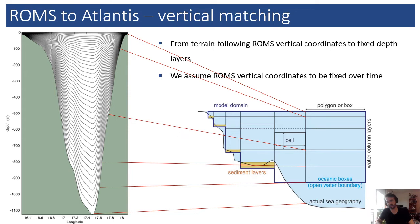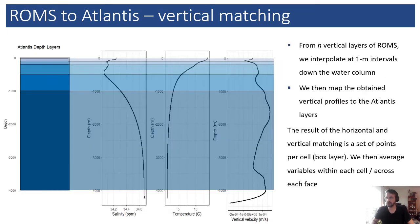For the vertical dimension, we need to keep in mind that ROMS follows terrain-following vertical coordinates. You have the same number of vertical layers in a ROMS model that get stretched and squeezed depending on the bottom depth, but you always have the same number of layers. We need to find a way to map those vertical layers from ROMS to the vertical layers in an Atlantis model. We set that up using vertical interpolation: at each single grid point of ROMS, we do a vertical interpolation at one-meter intervals down the water column.